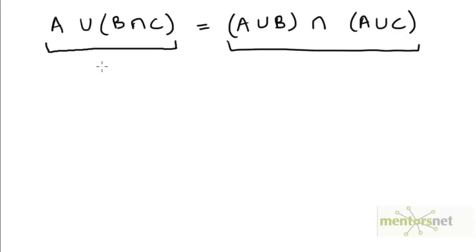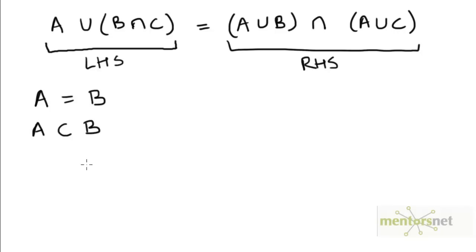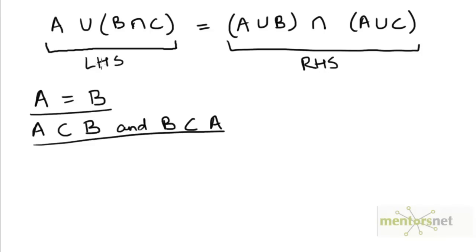There are two ways in which one might try to prove that the set on the left hand side is equal to the set on the right hand side. The first is to use the definition of equality of two sets. Recall that two sets A and B are equal if and only if every element of A is an element of B, and every element of B is also an element of A. So we could try to show that the left hand side is a subset of the right hand side, and the right hand side is a subset of the left hand side — that would prove equality.